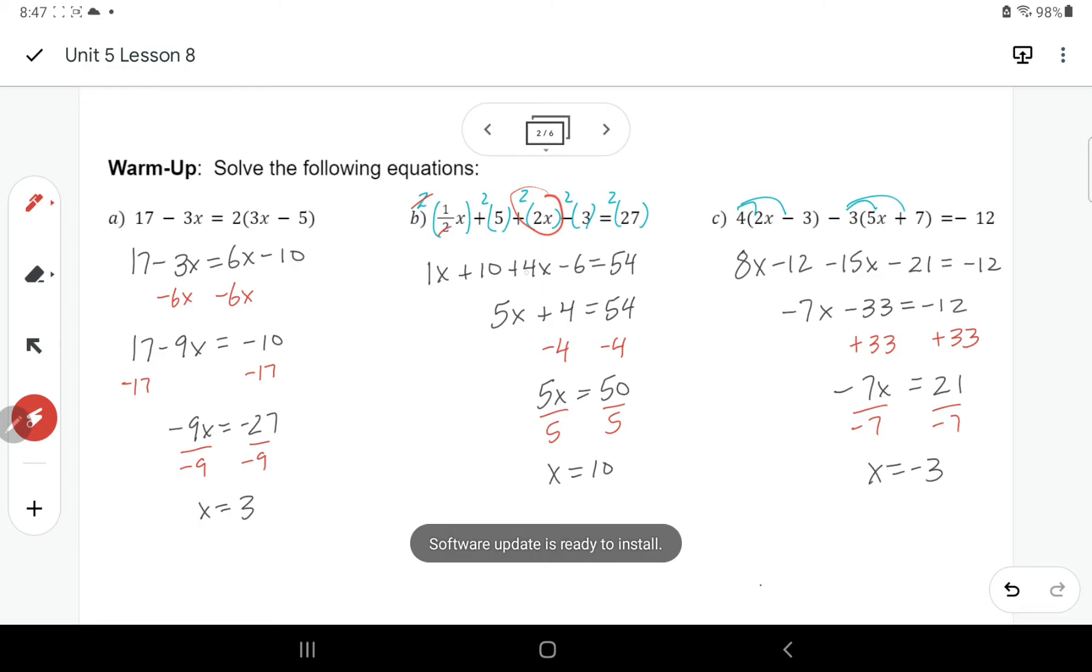And then I'm multiplying each one. 2 times 5 is 10, 2 times 2x is 4x, and it's like, just like that, all the way along. From there, you can simplify looking for your like terms, x's together, numbers together, and then it's pretty straightforward to solve from there.